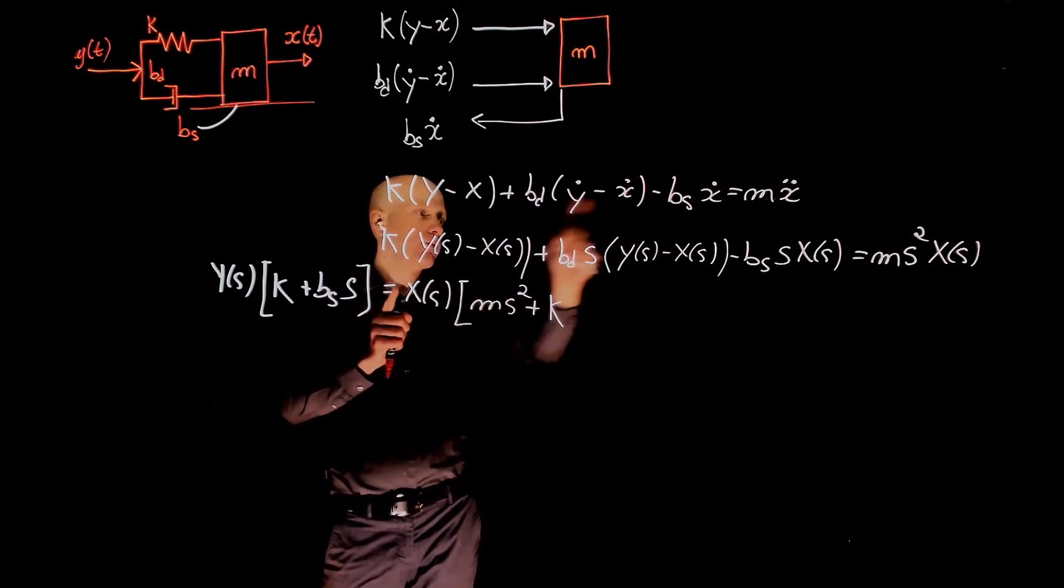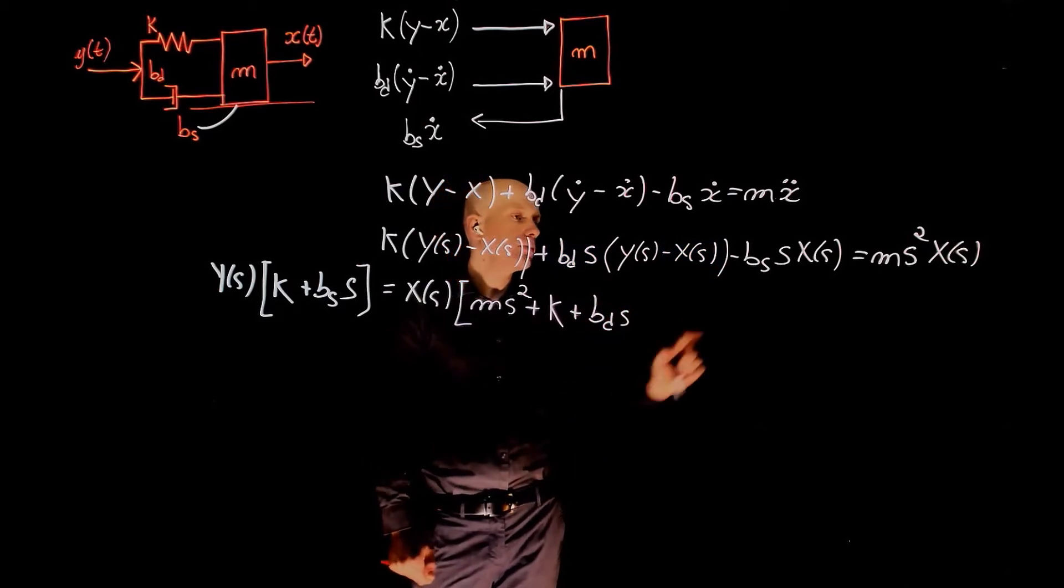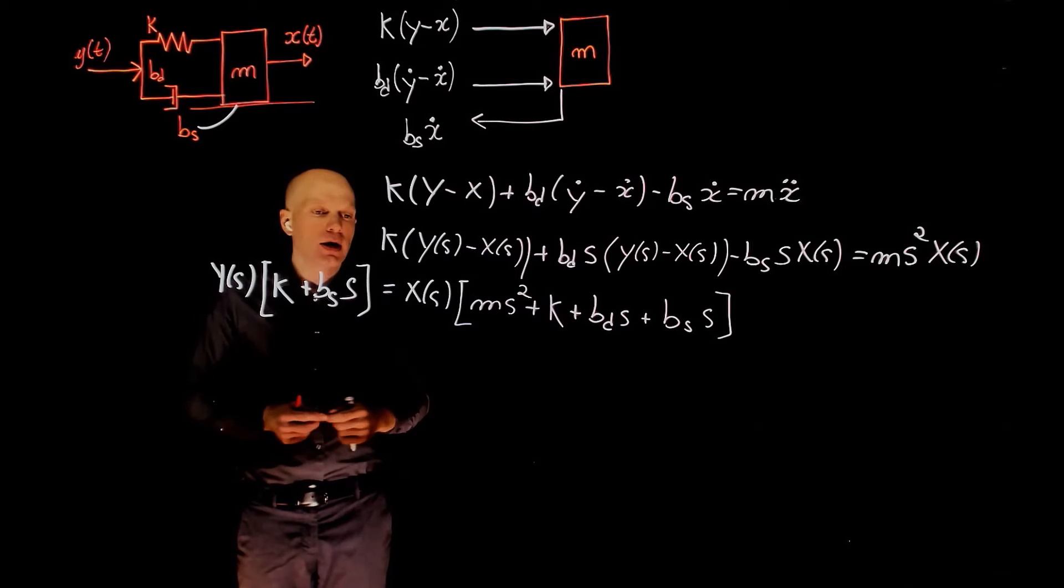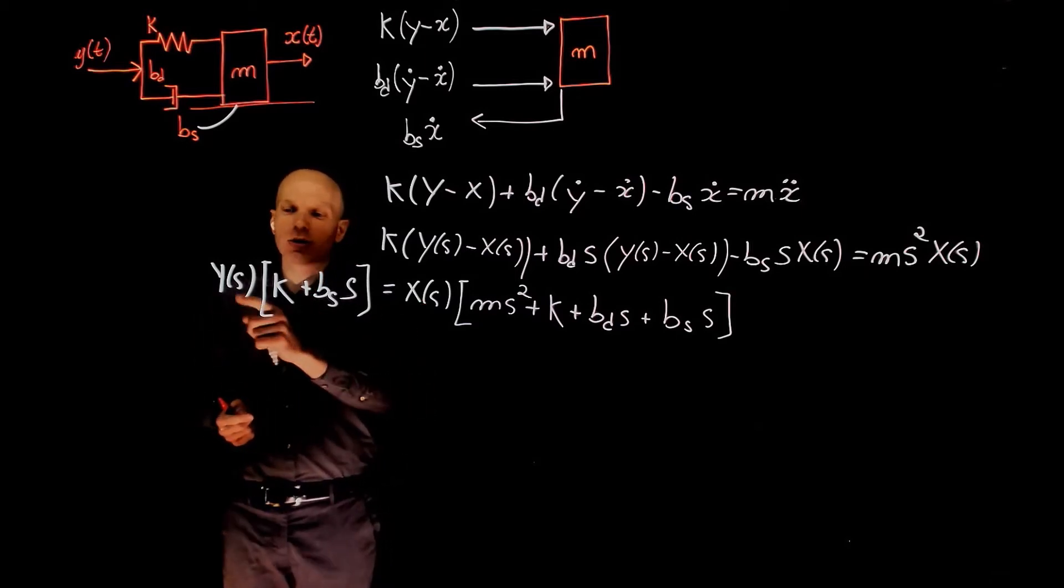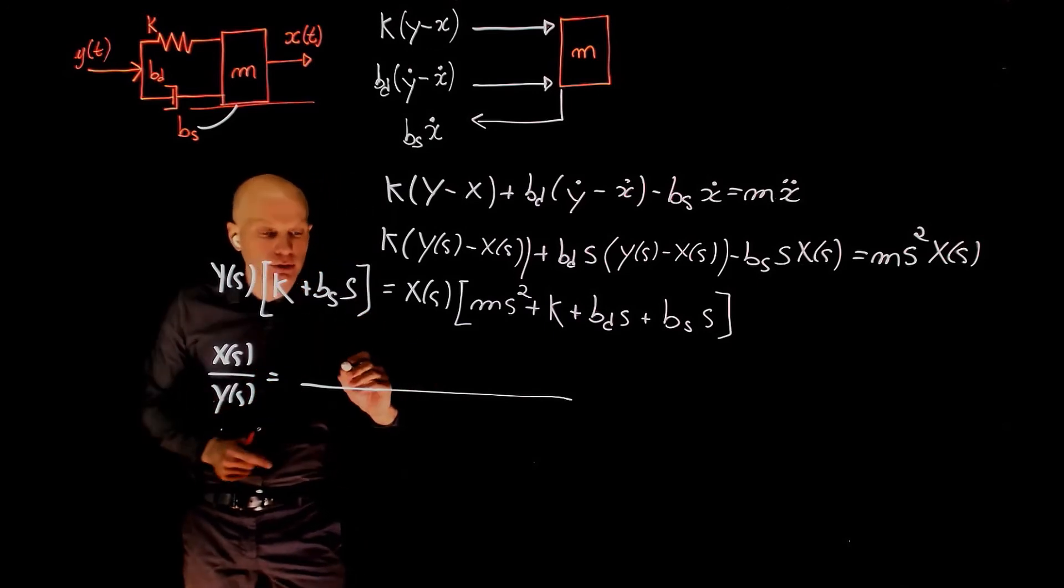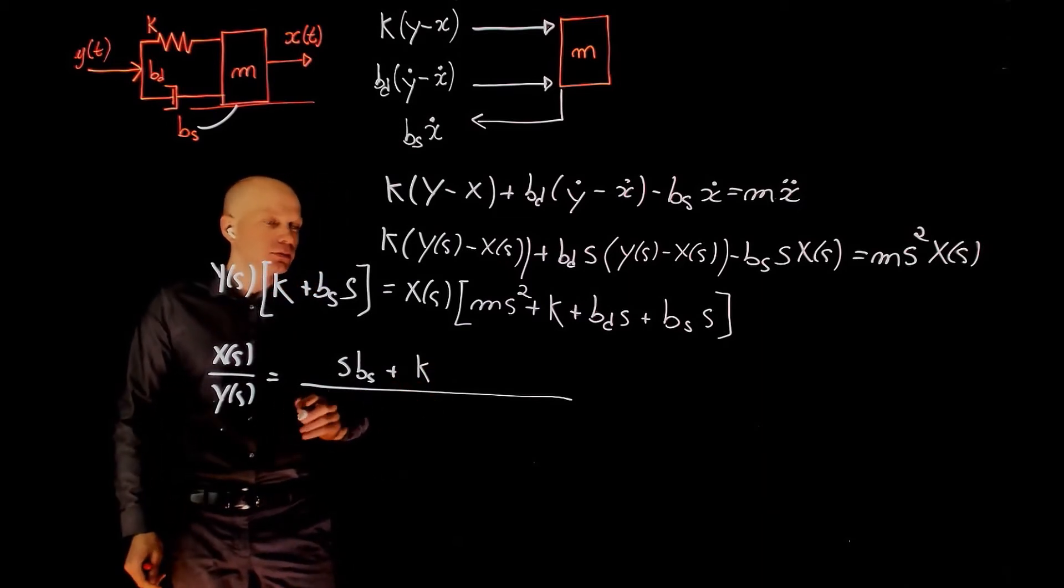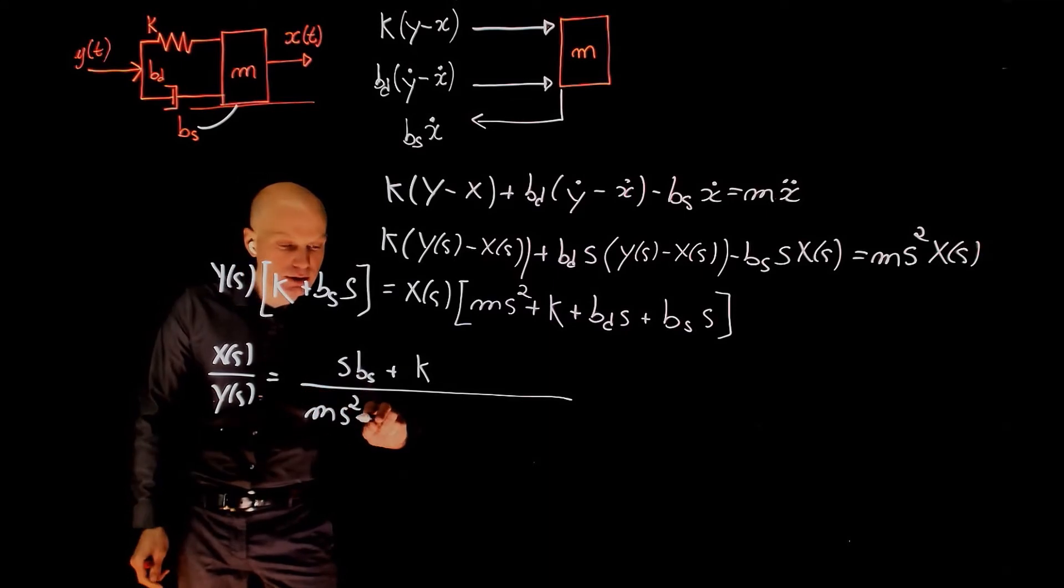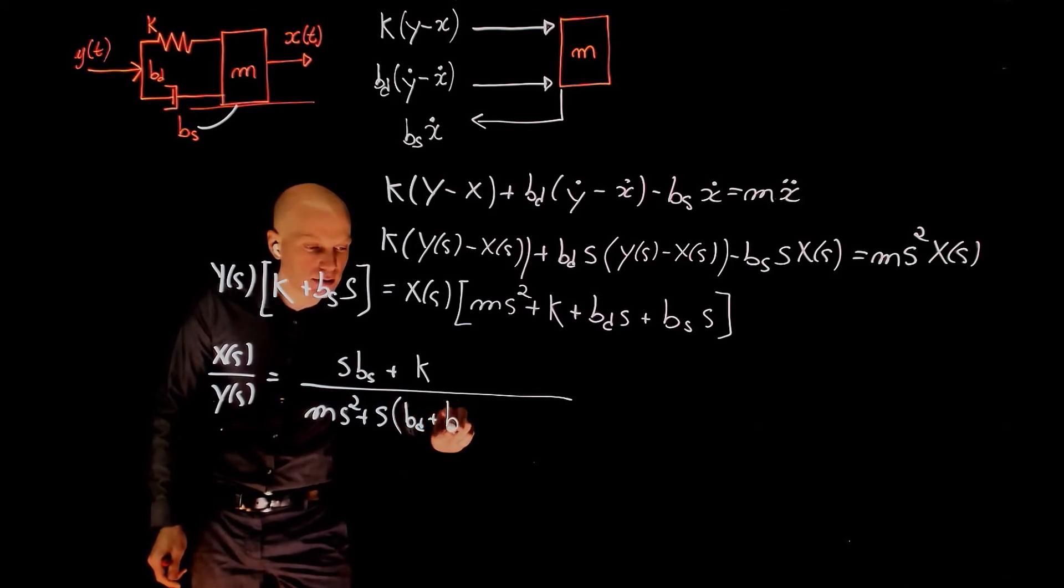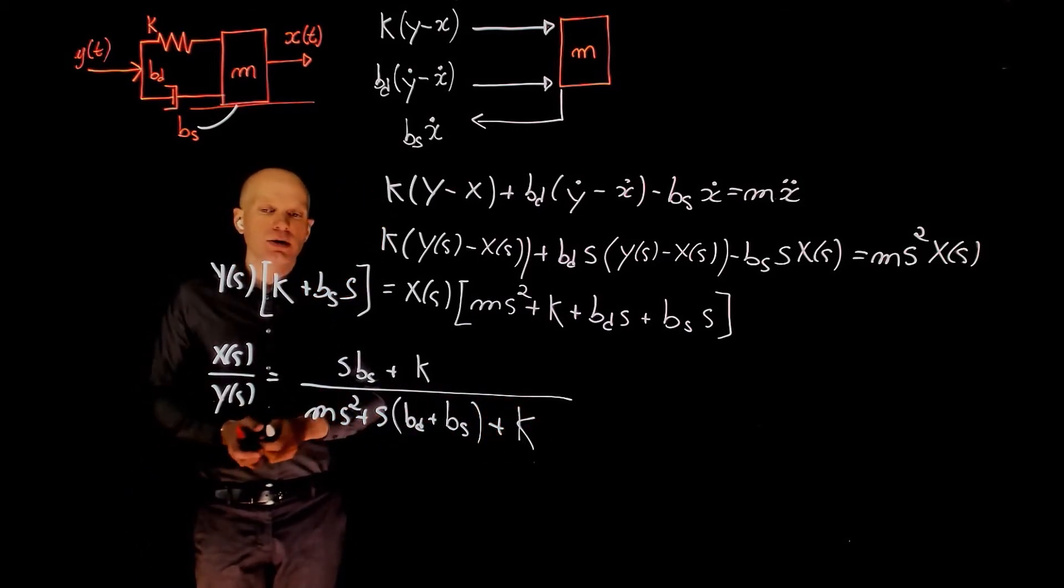Now the transfer function is defined as the output divided by the input, that is x over y. So x(s) over y(s) is, the numerator is bs, sbs plus k, and the denominator is ms squared plus, let's factor now all terms with s, s times bd plus bs plus k. And this is the transfer function of the system.